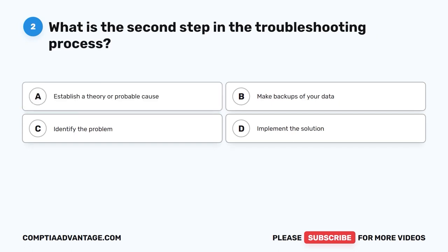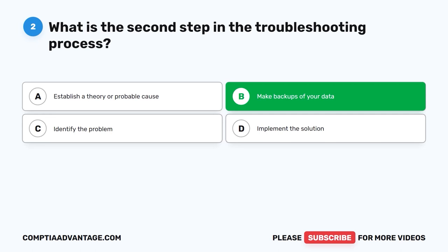Question 2. What is the second step in the troubleshooting process? A. Establish a theory or probable cause. B. Make backups of your data. C. Identify the problem. D. Implement the solution. The correct answer is B. Make backups of your data.